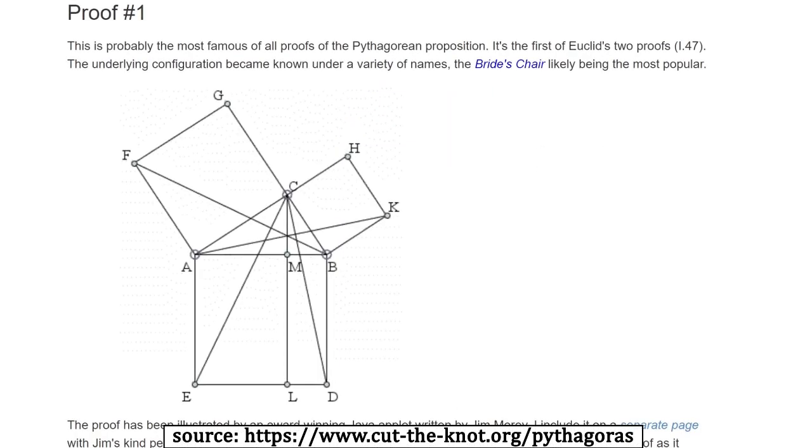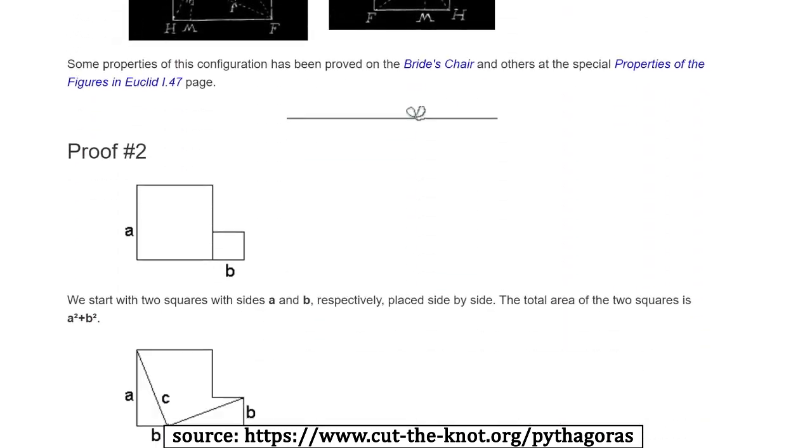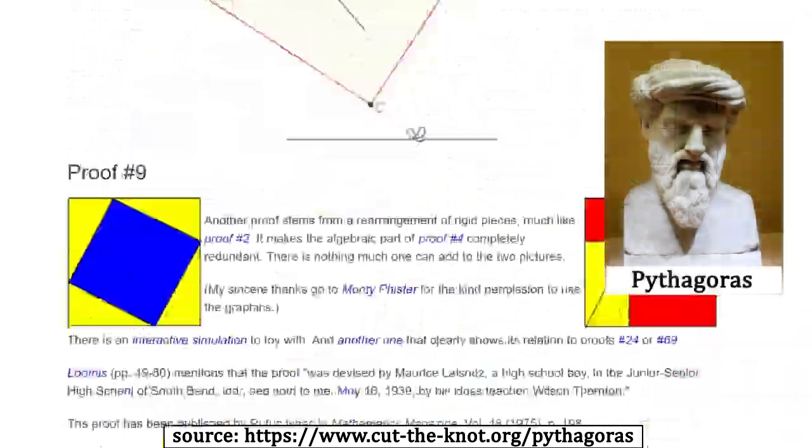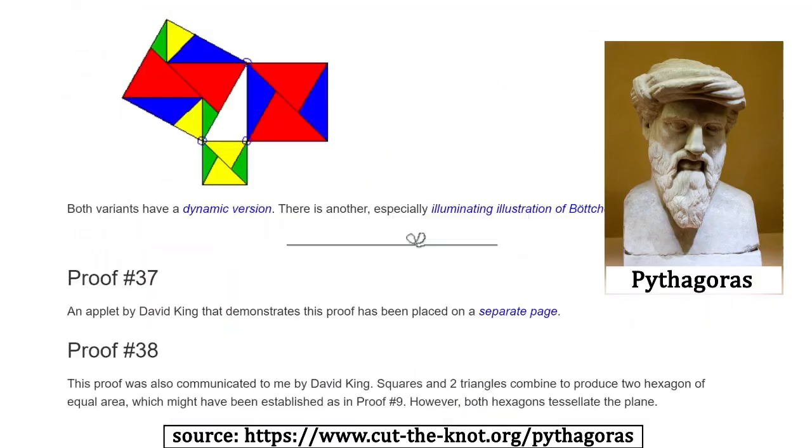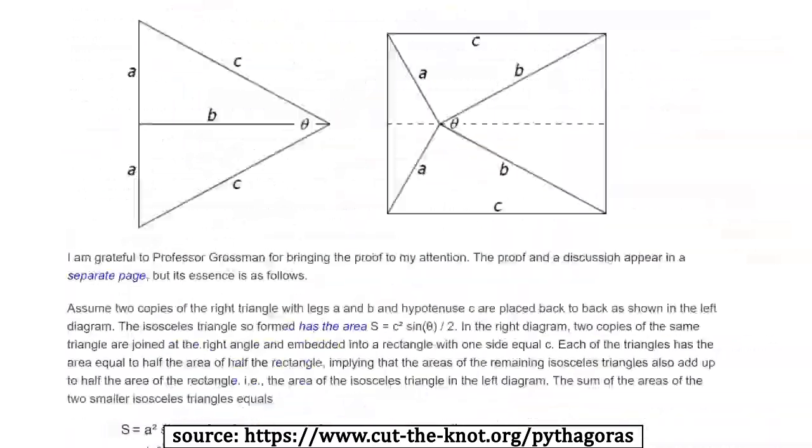There are over 300 proofs for the Pythagorean theorem. The first was discovered by Pythagoras, or one of his followers, somewhere around the year 500 BC. But the relationship was known centuries before that.